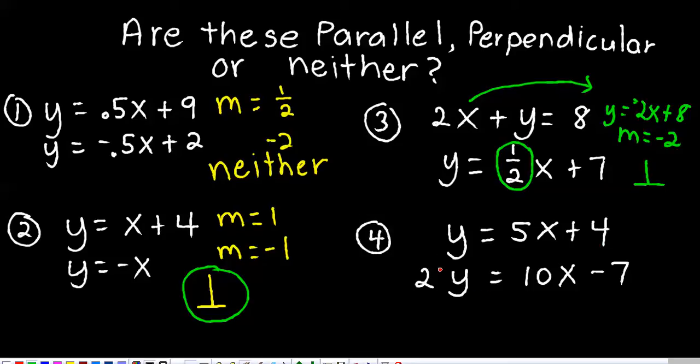And then, this last one I kind of threw in to trick you, you can't really determine the slope in the second equation, unless you divide everything by 2, that way you're going to isolate your y value. So, if we divide everything by 2, or you can just draw, I think you'd like to do this, draw one line and put a 2 there.